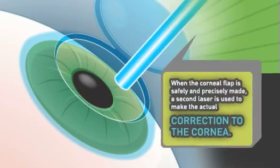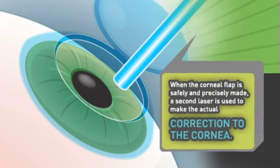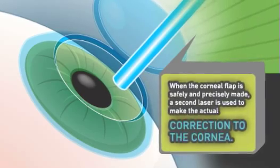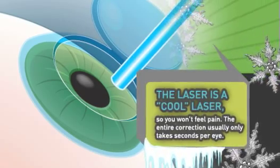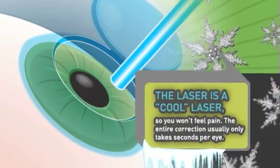When the corneal flap is safely and precisely made, a second laser is used to make the actual correction to the cornea. The laser is a cool laser so you won't feel pain. The entire correction usually only takes seconds per eye.